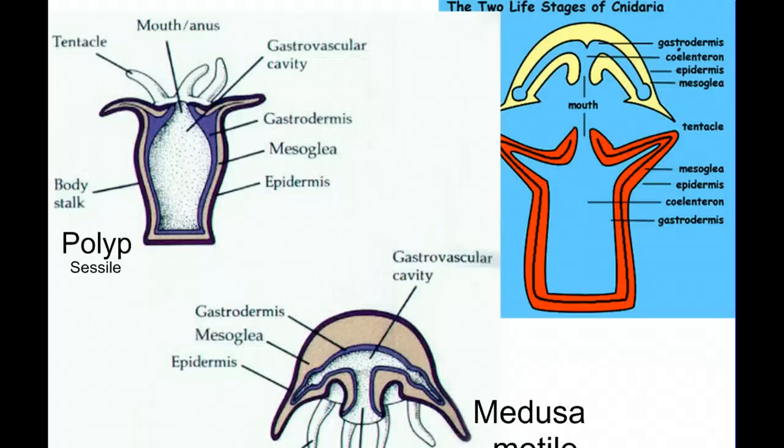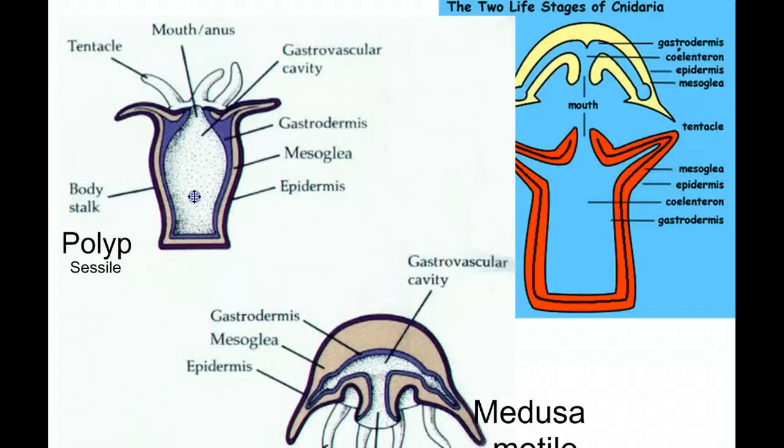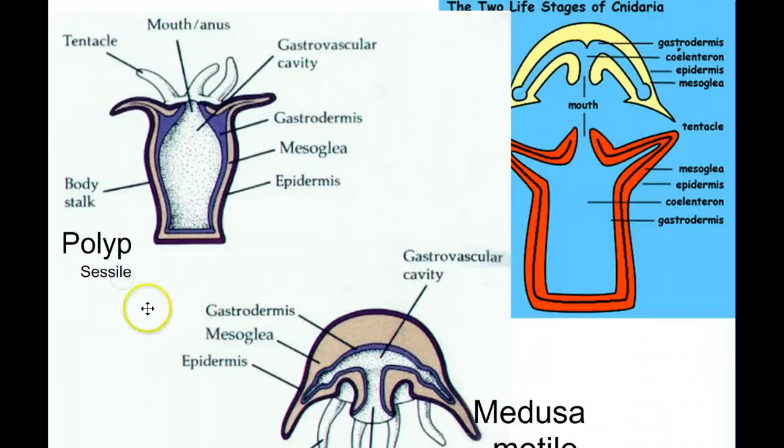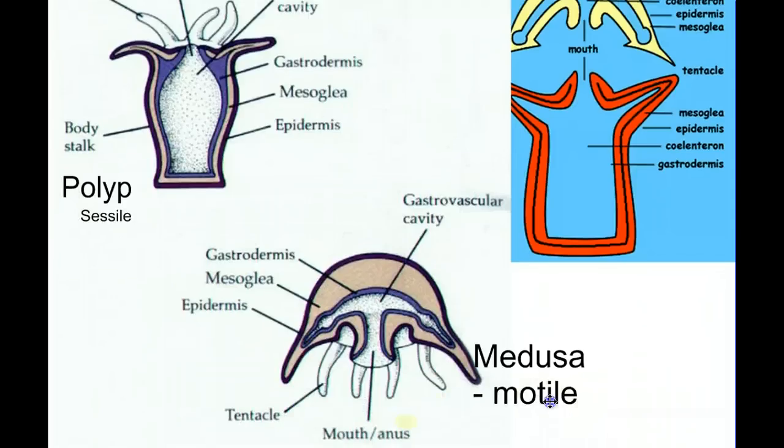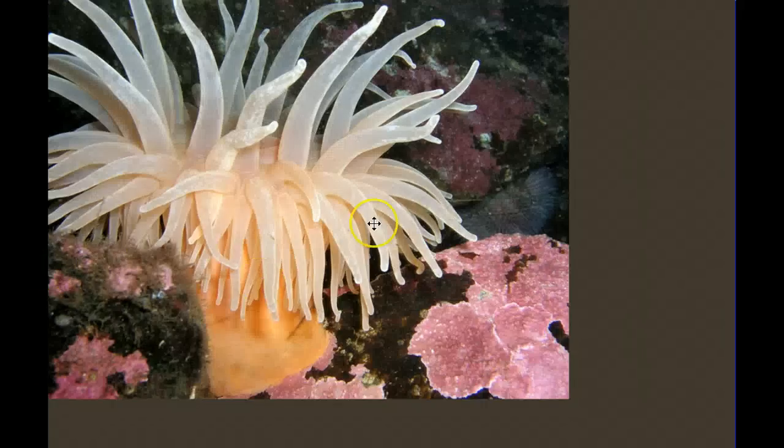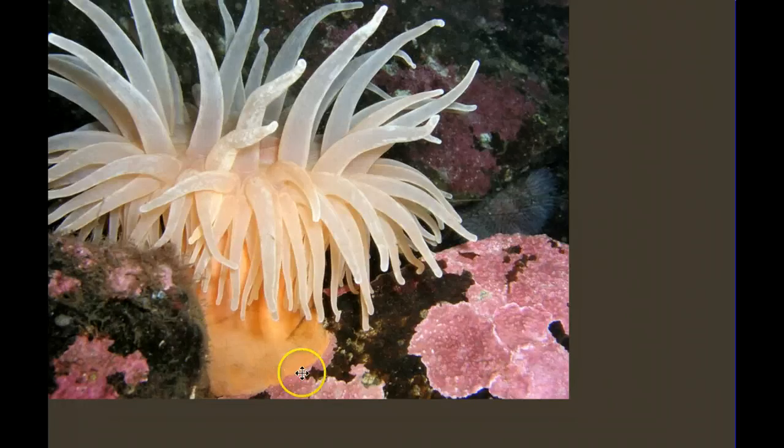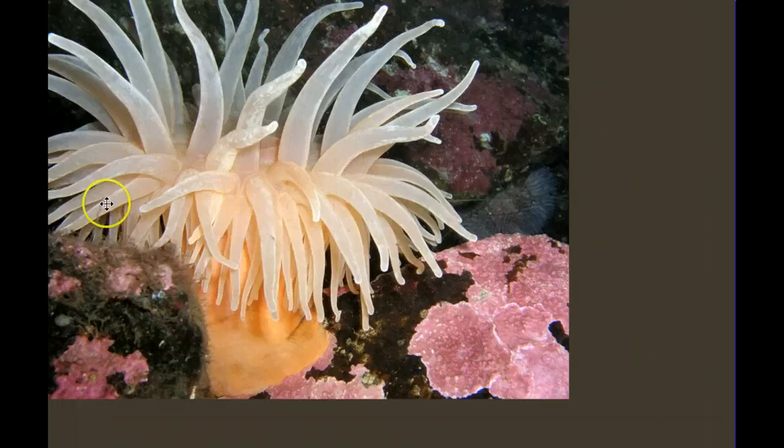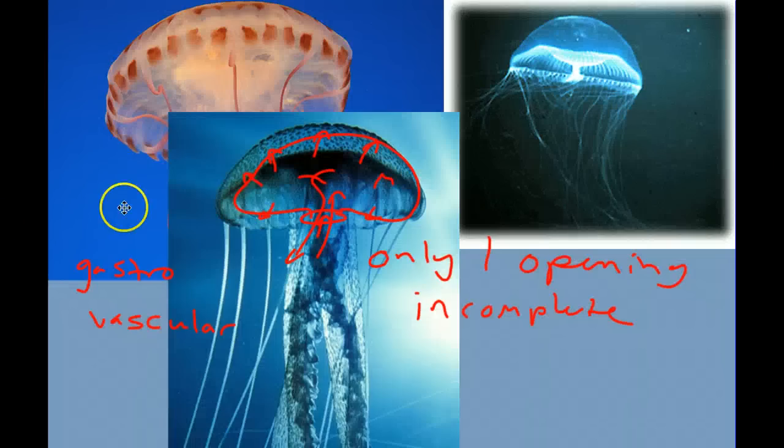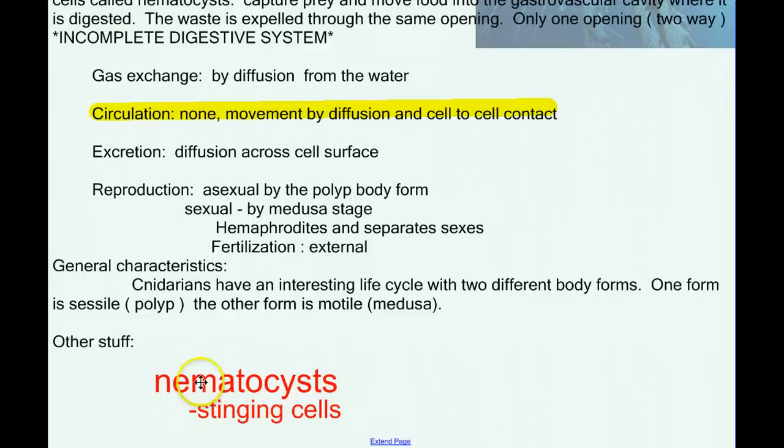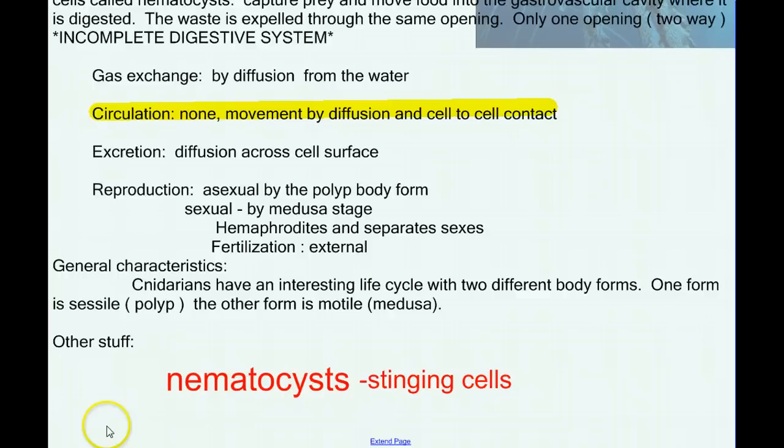In the cnidarians, we have two basic body forms. We have the polyp as a sessile version and the medusa stage, which is usually motile. So you can think jellyfish for the medusa as it floats around, and maybe a sea anemone as a polyp. It's sessile. It stays attached to the bottom here and it uses these tentacles to feed off the particles of food that come by, the same as the jellyfish. The specialized stinging cells that all cnidarians have are called nematocysts. And if you've ever been stung by a jellyfish, you know what those are.